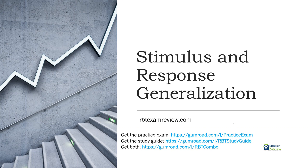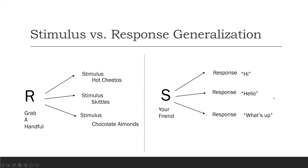So let's get started. We have a diagram here: stimulus generalization on the left, response generalization on the right. For stimulus generalization, we have a single response of grabbing a handful occurring across multiple stimuli — we're generalizing across stimuli. I can grab a handful of Cheetos, a handful of Skittles, a handful of chocolate almonds. So when you think stimulus generalization, think multiple stimuli.